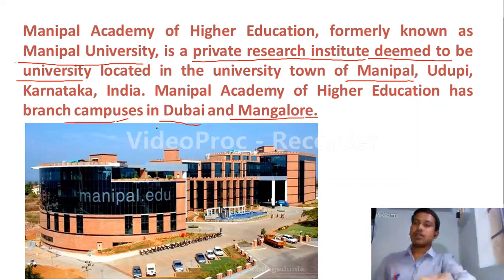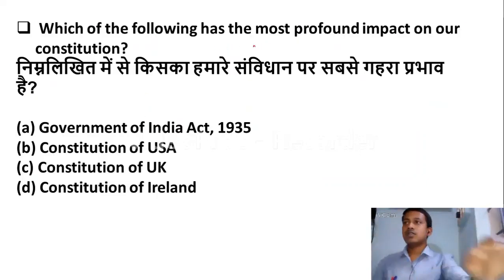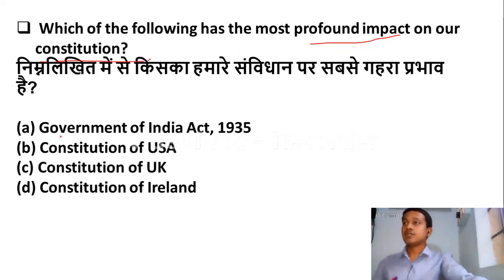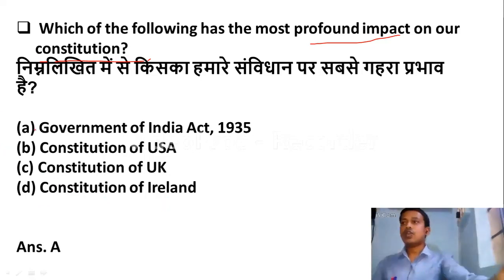The next question: which of the following had the most profound impact on our Constitution? Option A: Government of India Act 1935. Option B: Constitution of USA. Option C: Constitution of UK. Option D: Constitution of Ireland. The right answer is Option A — Government of India Act 1935.